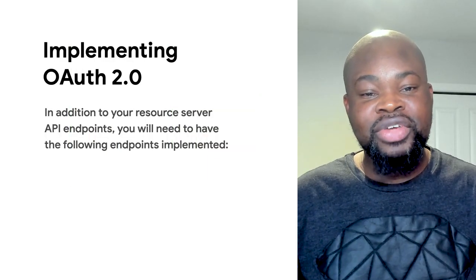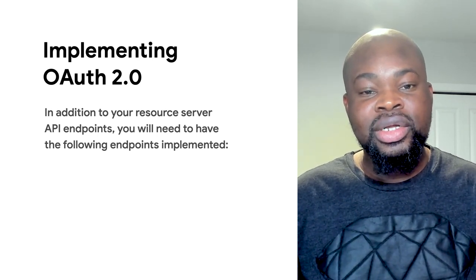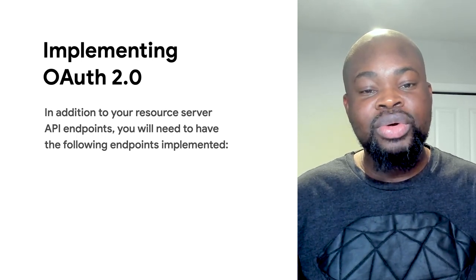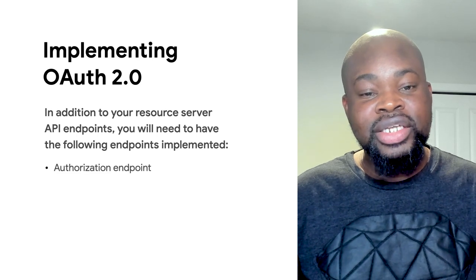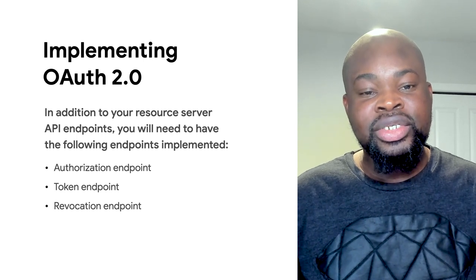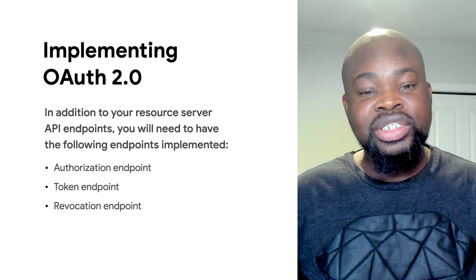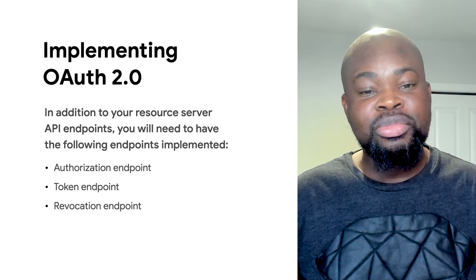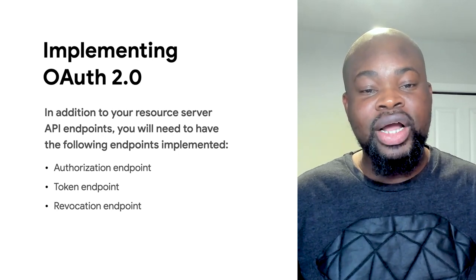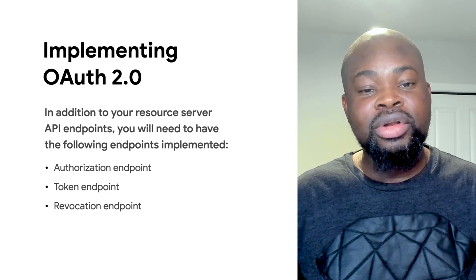Now let's talk about the specific details of the OAuth endpoints you will be creating. In addition to your resource server API endpoints, you will need to have the following OAuth endpoints implemented: the authorization endpoint, the token endpoint, and the revocation endpoint. Given the wide adoption of OAuth over the years, there are now standard libraries and frameworks that exist for almost every programming language that implement an OAuth server for you and define all the required endpoints. You can opt for using one of these libraries or implementing your own methods.